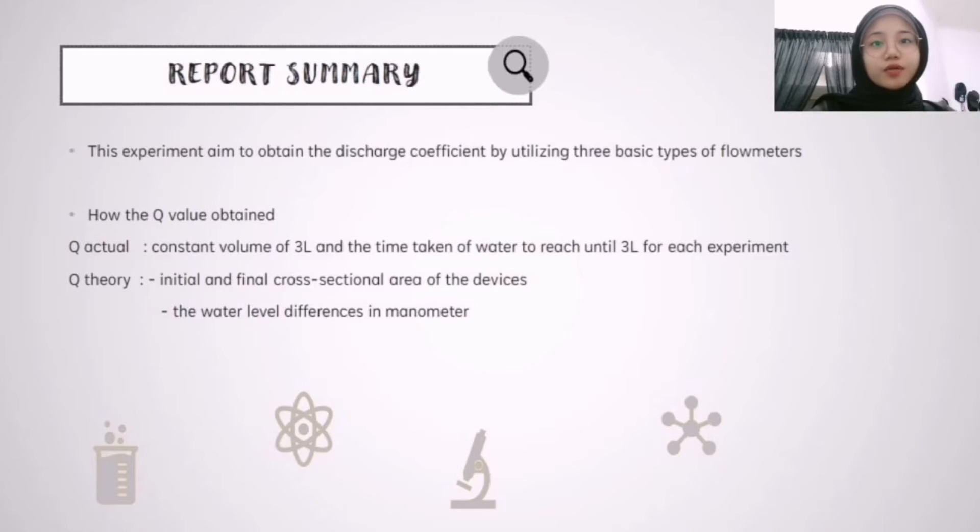While the Q theory is obtained by using the initial and final cross sectional area of devices and the water level differences in manometer with different types of flow meter.